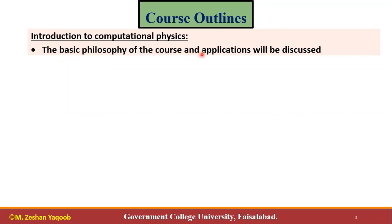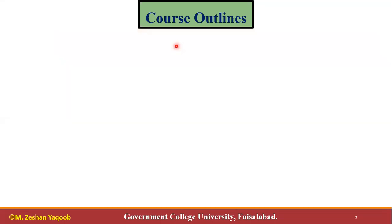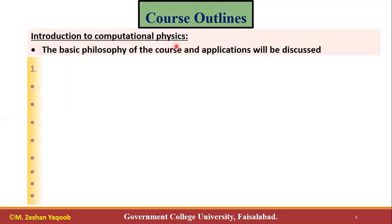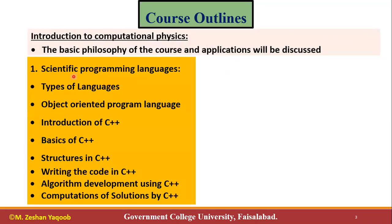After that, we discussed that computational physics is made of two things: one is the computer and one is the physics. So we will discuss physics and computer together.